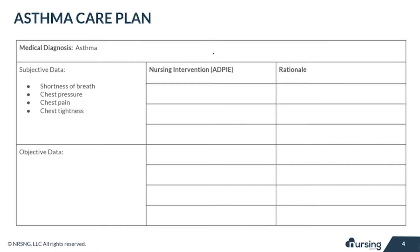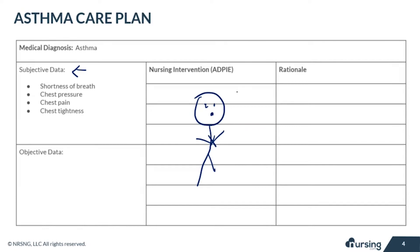Let's take a look at our care plan for asthma, starting with the subjective data. Our patient might feel really short of breath because of that lack of oxygen. They might experience some chest pain and tightness because of those bronchioles constricting, and from all the coughing.